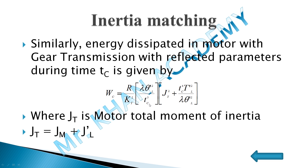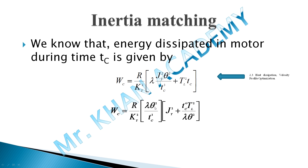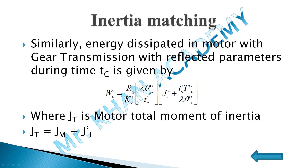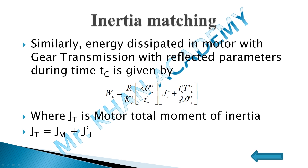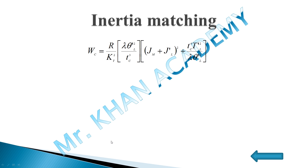Considering reflected parameters on the motor side with gear transmission, the equation uses θ' and T' instead of θ and T. The total moment of inertia Jt is the motor inertia Jm plus the reflected load inertia J'l. Substituting Jt = Jm + J'l, the equation becomes: Wc = (R/kt²) · [λθ'l² · tc³ · (Jm + J'l)² + tc⁴ · T'l² / (λθ'l)].